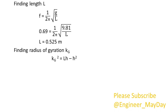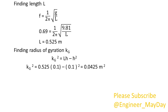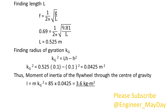Finding radius of gyration Kg: Kg squared equals 0.0425 squared meters. Thus, moment of inertia of the flywheel through the center of gravity I equals 3.6 kilogram squared meters.